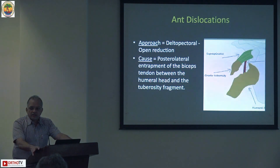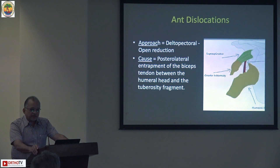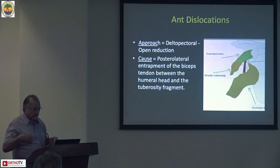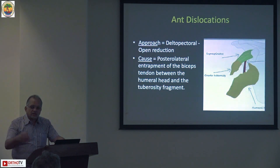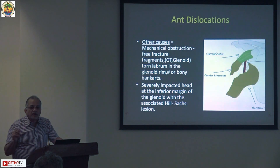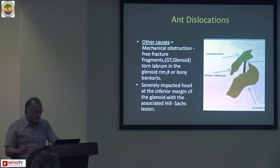Practice of closed manipulation of these types of injuries should be avoided so that you don't end up with a complication. The preferred approach is a deltopectoral approach. Open reduction is needed because of postero-lateral entrapment of the biceps tendon - the biceps tendon goes behind the dislocated humeral head anteriorly - which is why we cannot reduce it by closed method. Other causes could be mechanical obstruction from a free fracture fragment, usually the greater tuberosity or a part of the glenoid, or a torn labrum at the glenoid rim.